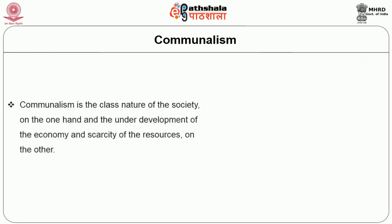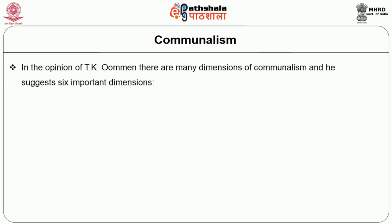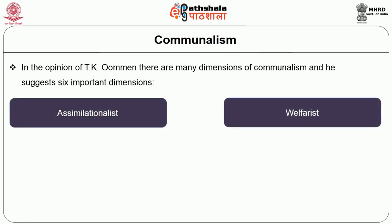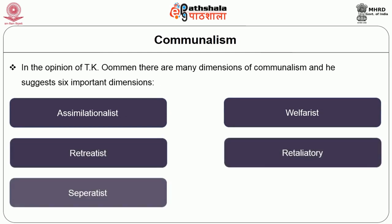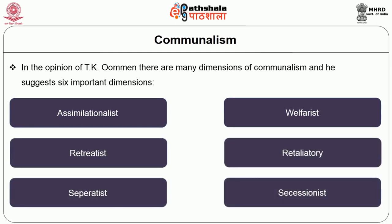At the macro level, communalism is linked to the class nature of society on one hand, and the underdevelopment of the economy and scarcity of resources on the other. T.K. Uman suggests six important dimensions of communalism: assimilationist, welfarist, retreatist, retaliatory, separatist, and secessionist.